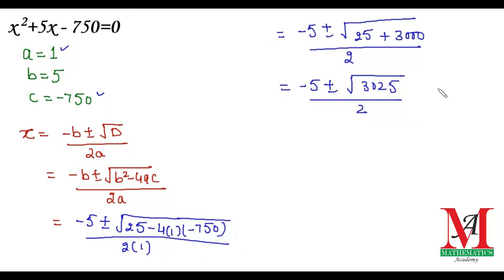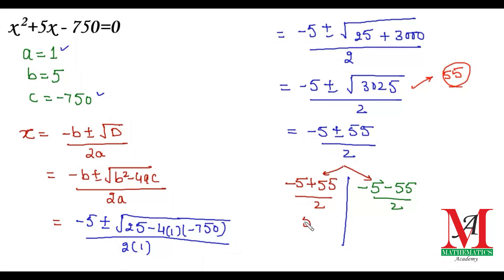We know that the square root of 3025 is 55. So we have (-5 ± 55)/2. This splits into two parts: first with plus and second with minus. That means (-5 + 55)/2 and (-5 - 55)/2.